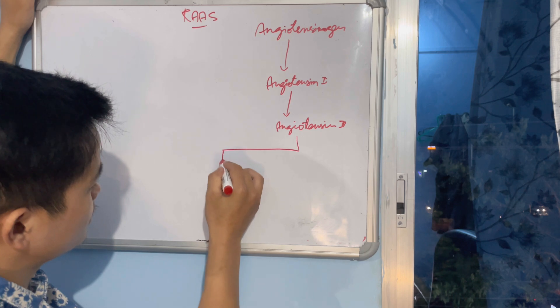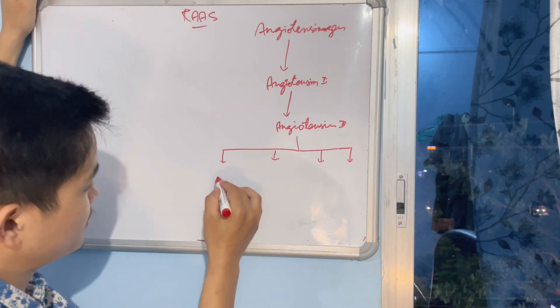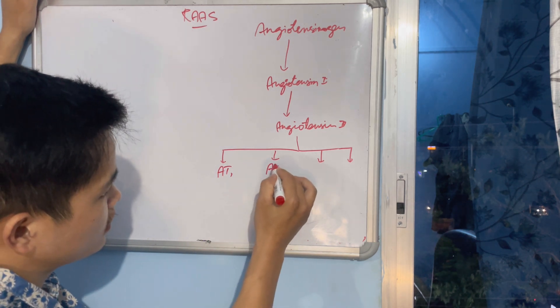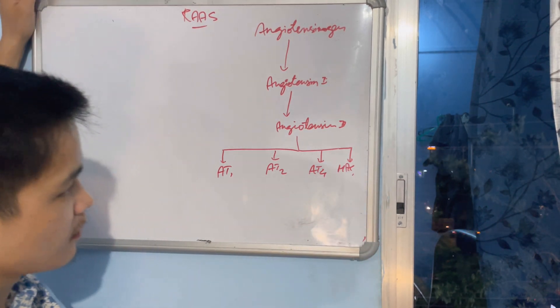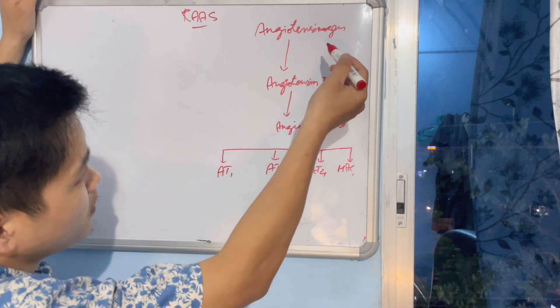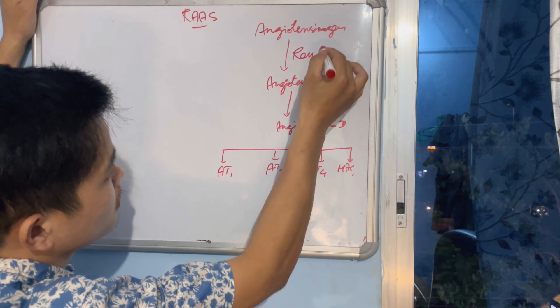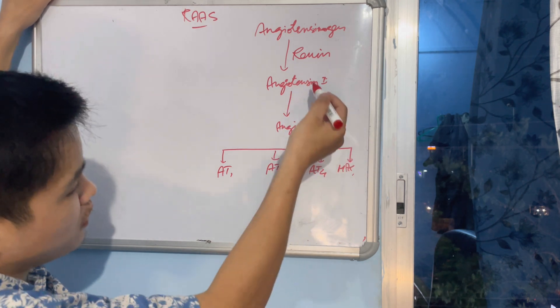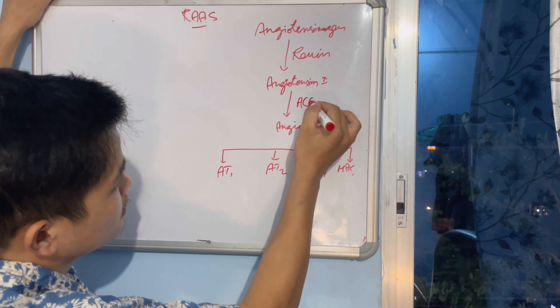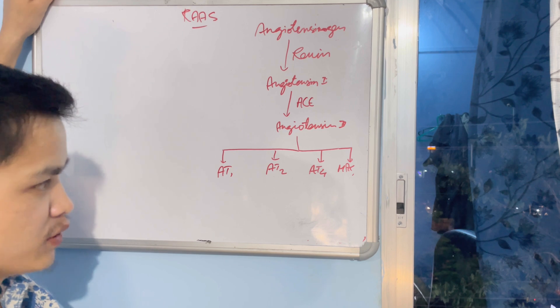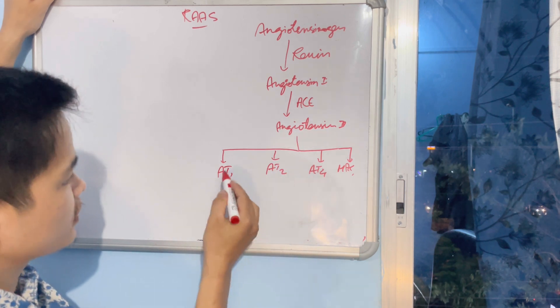What happens in RAS system? Angiotensinogen is converted to angiotensin I, which is converted to angiotensin II. After this, there are various receptors like AT1, AT2, MAS. Angiotensinogen to angiotensin I - this conversion is brought by renin. And angiotensin I to angiotensin II is done by ACE. We call it - the name itself is angiotensin converting enzyme. You already know it, I'm revising it for you. This angiotensin II, when it works at AT1, produces effects.